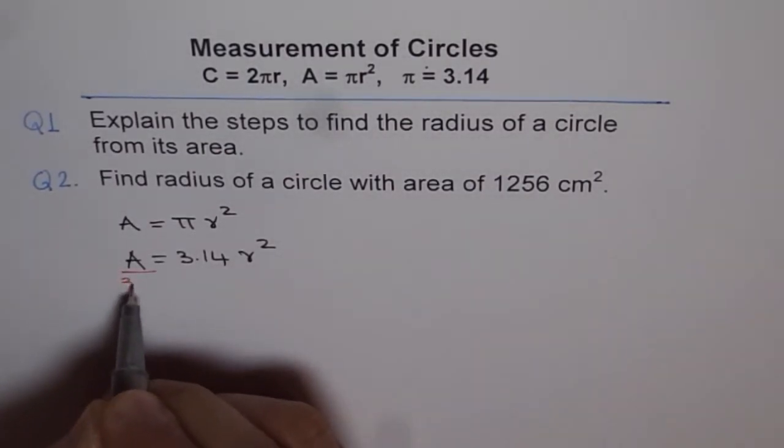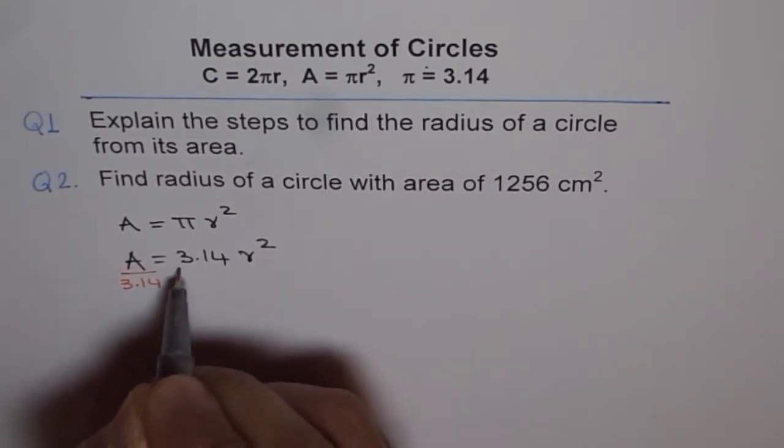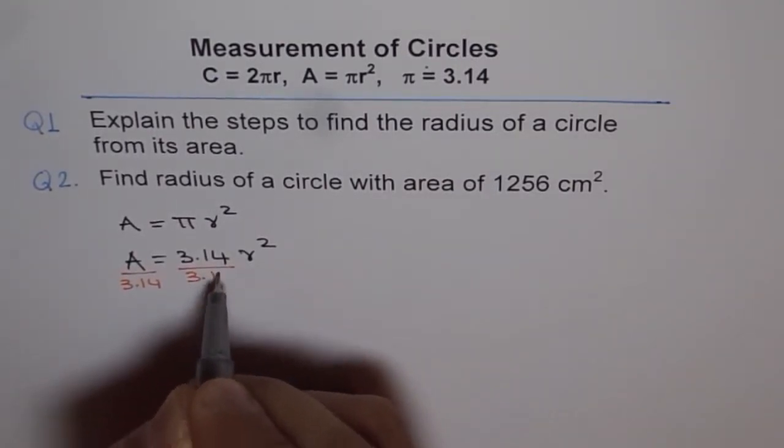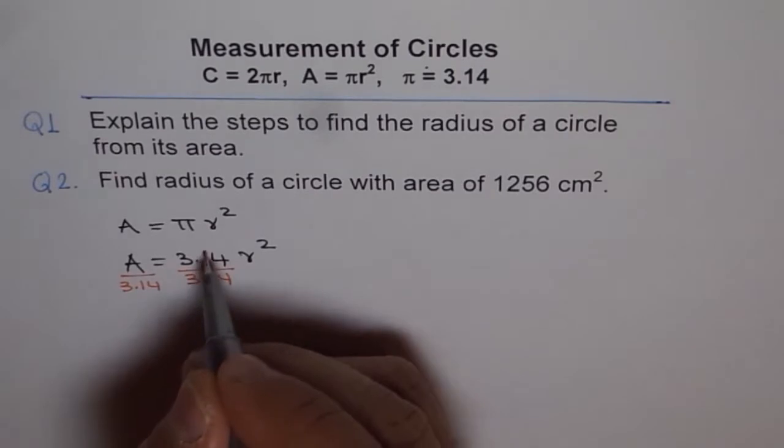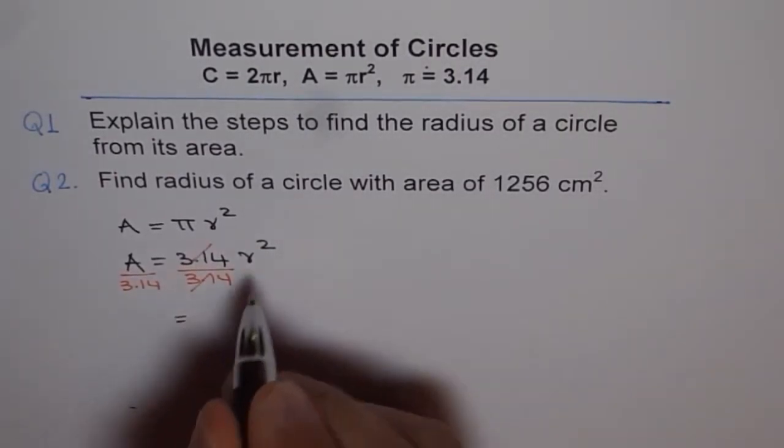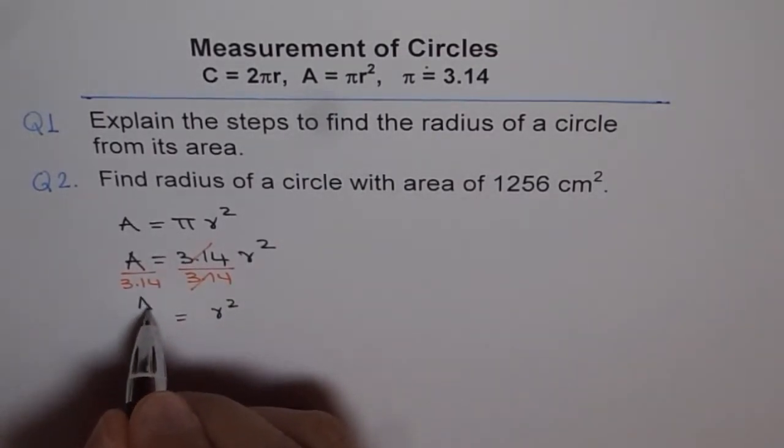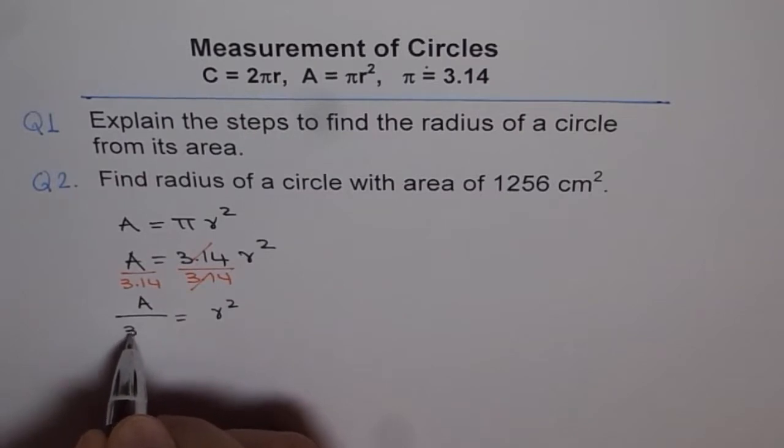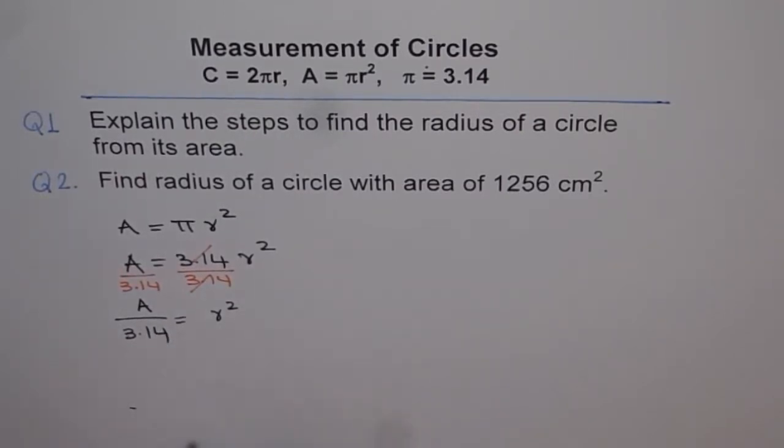So you can divide both sides by 3.14. If you divide by 3.14 this gets cancelled. And so we are left with r² on the right side and we get area divided by 3.14.